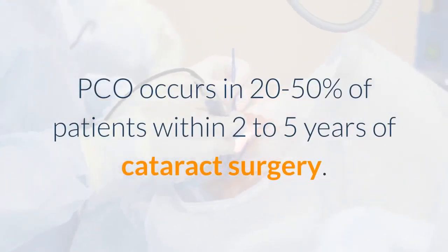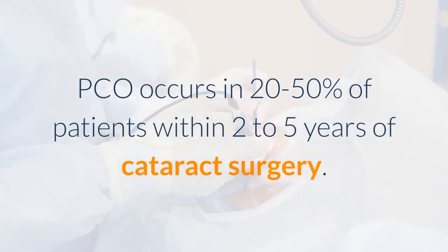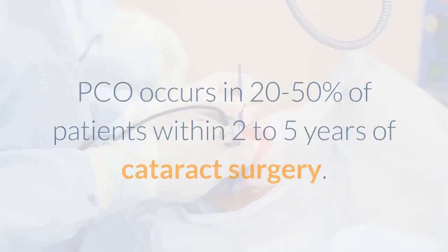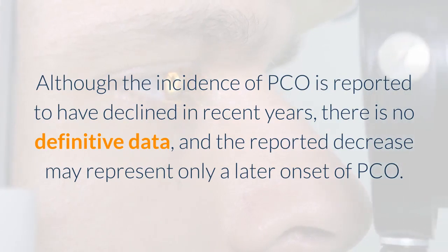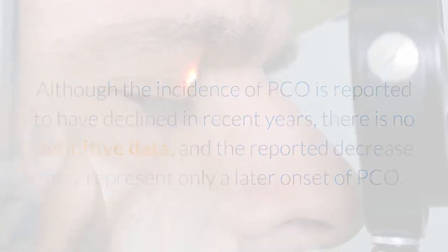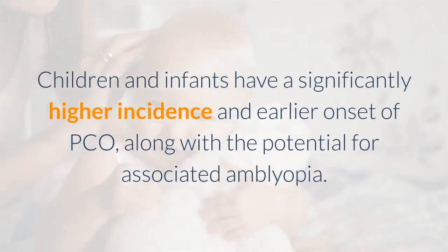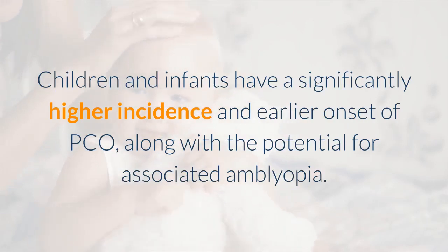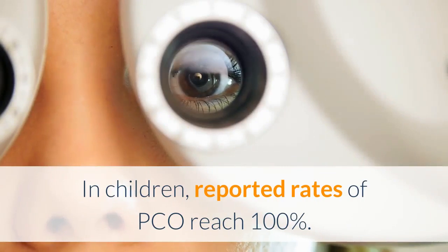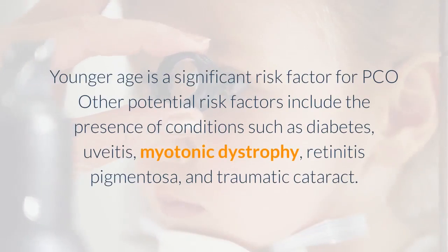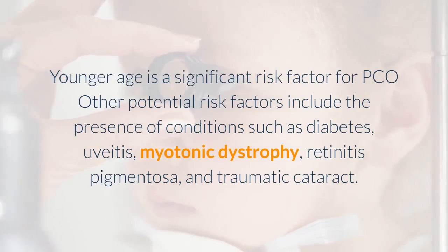PCO occurs in 20-50% of patients within 2-5 years of cataract surgery. Although the incidence of PCO is reported to have declined in recent years, there is no definitive data, and the reported decrease may represent only a later onset of PCO. Children and infants have a significantly higher incidence and earlier onset of PCO, along with the potential for associated amblyopia. In children, reported rates of PCO reach 100%, and younger age is a significant risk factor for PCO.